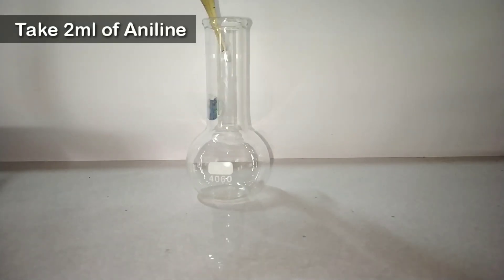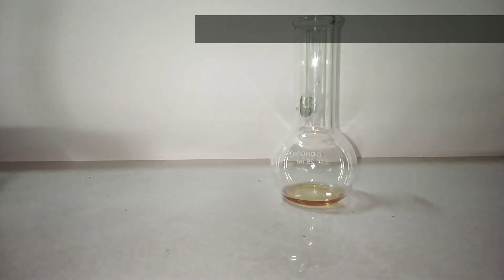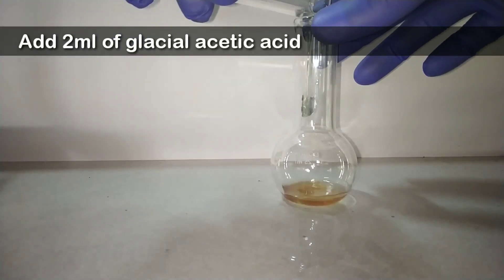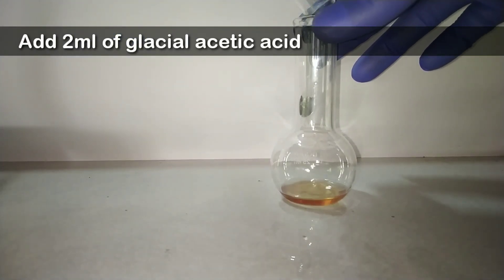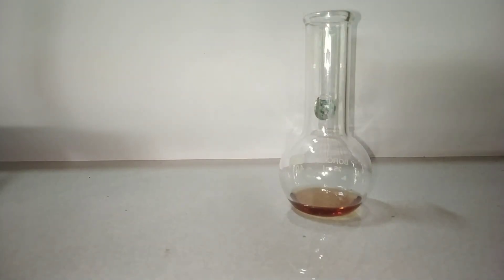Procedure: first of all we take 2 ml of aniline in this flat bottom flask. Into that we will add 2 ml of glacial acetic acid. We should be very careful while handling aniline as it is toxic.